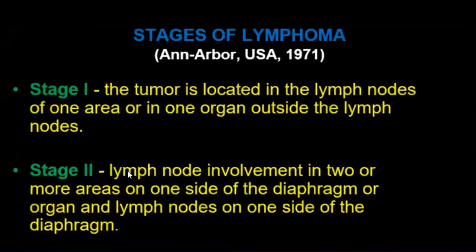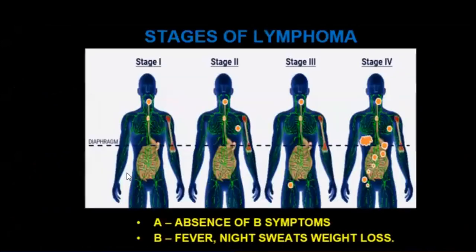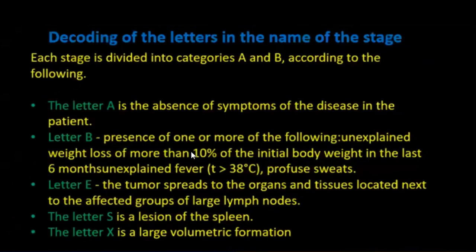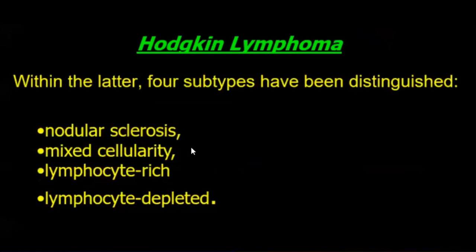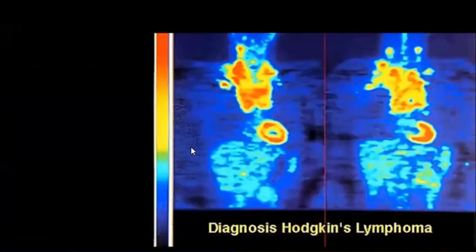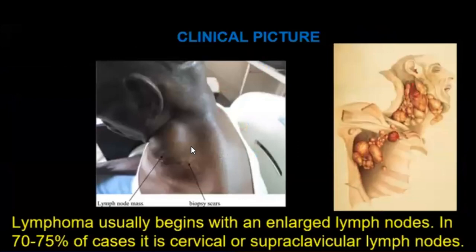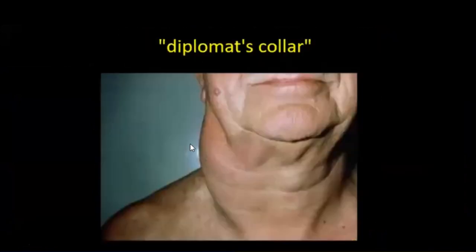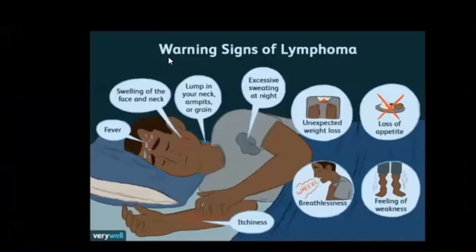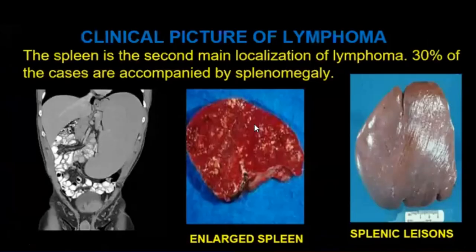Unfortunately, leukemia is very common throughout the world and very difficult to treat. Some stages of lymphoma are allocated. Lymphoma usually begins with enlarged lymph nodes. Hodgkin's lymphoma has some diagnostic methods. Symptoms of lymphoma present with characteristic external signs and a clinical picture including lesions of the spleen and liver systems.